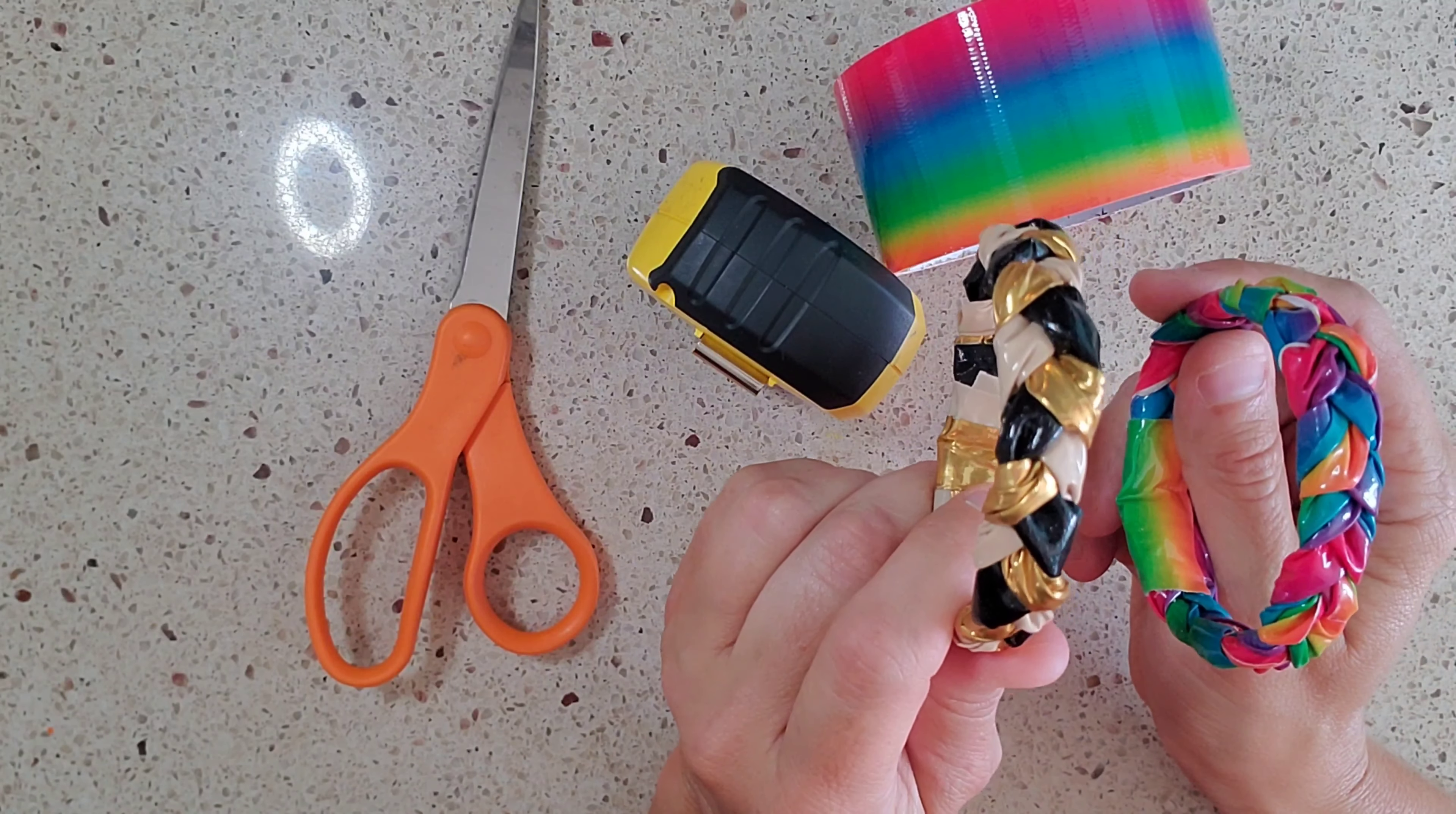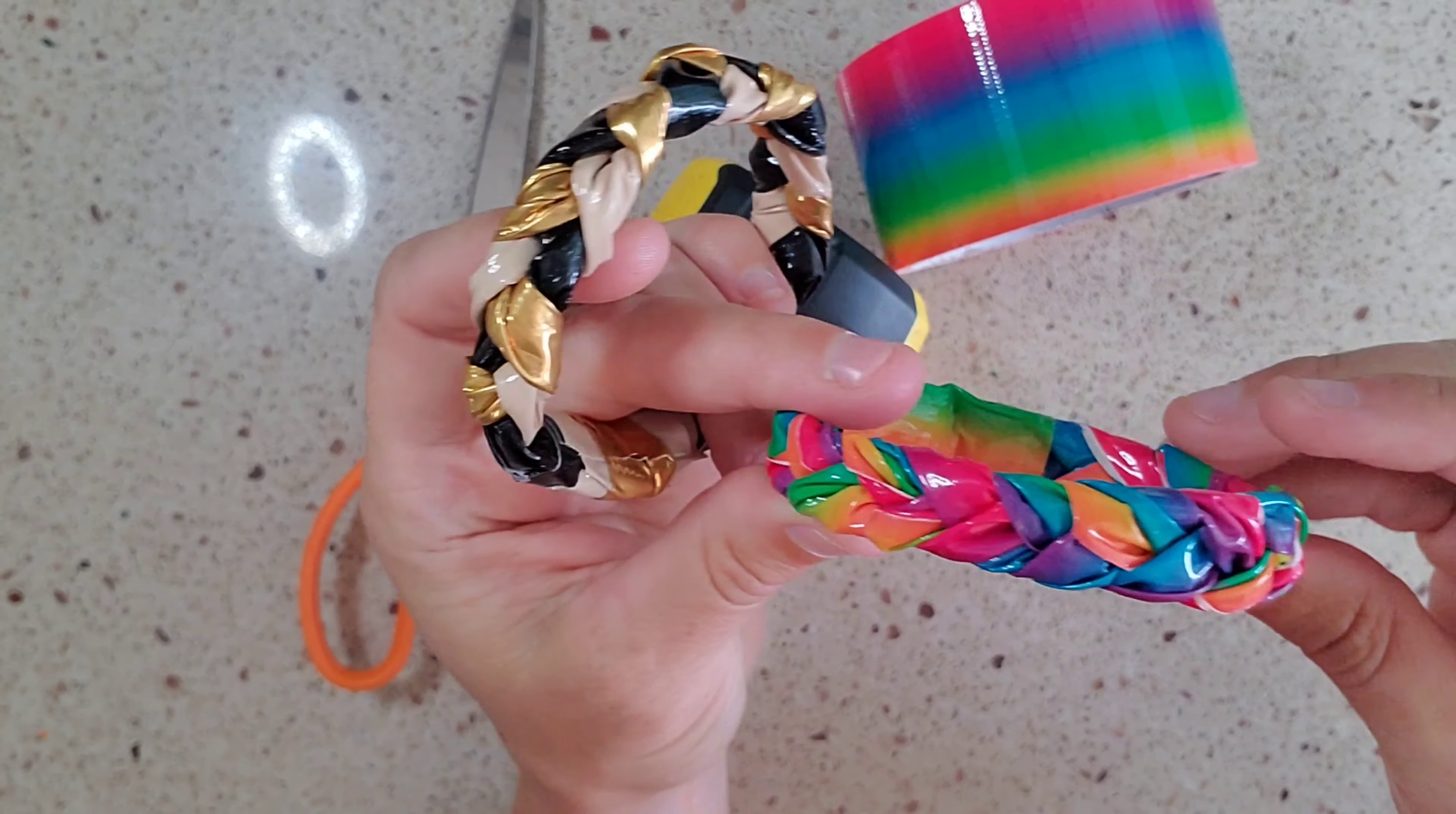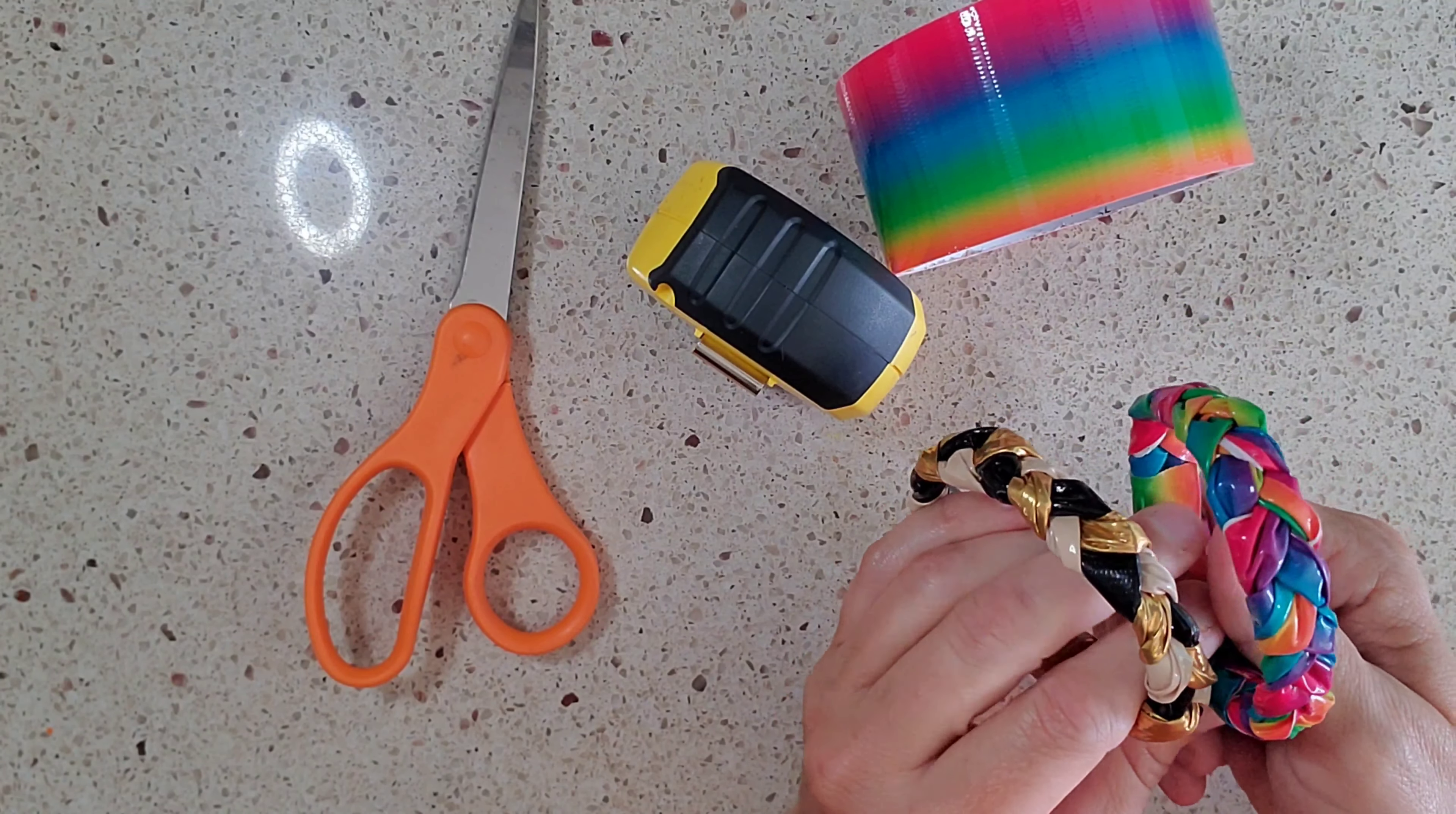I made one with some solid colors, which you can see is like a tan and then a bronze color and black. And then I made one with colored rainbow duct tape, which is what you've seen here. This one is at Michaels. They have lots of different designs that you can use.